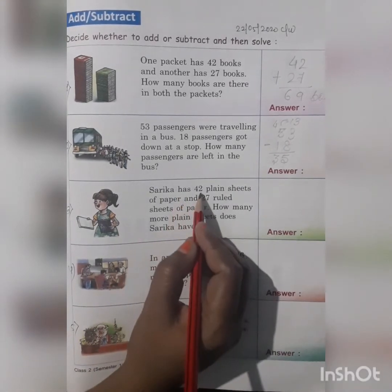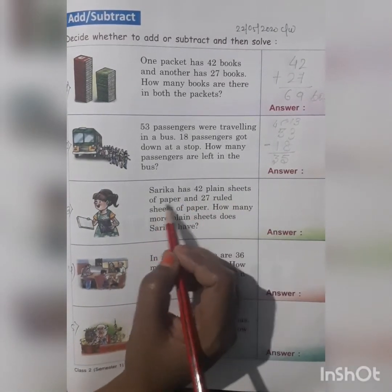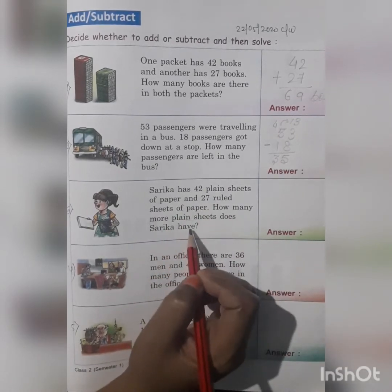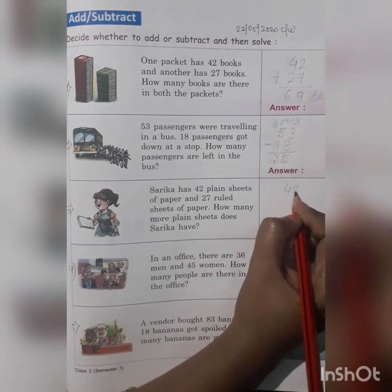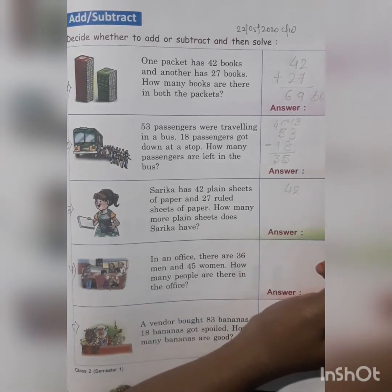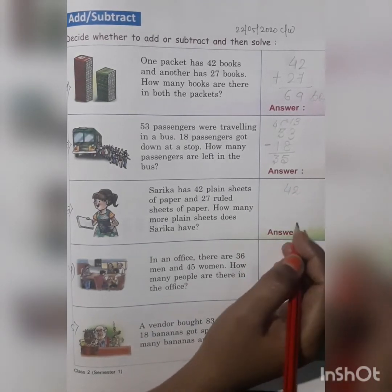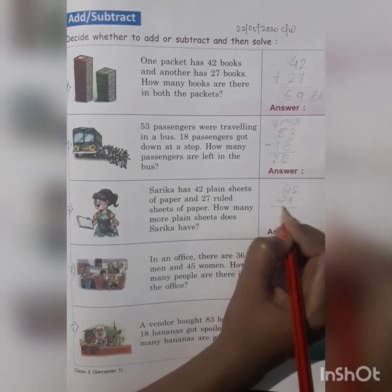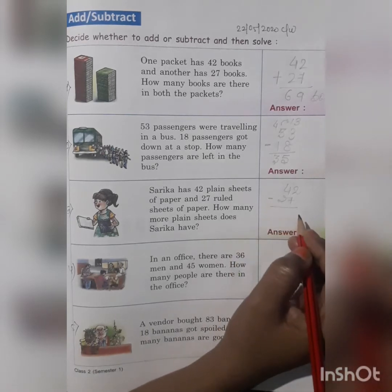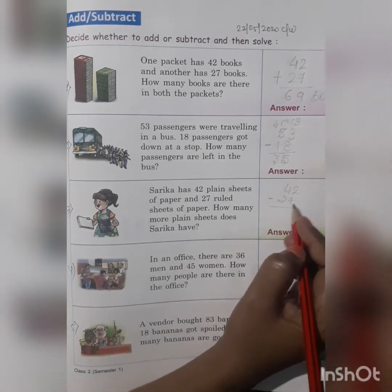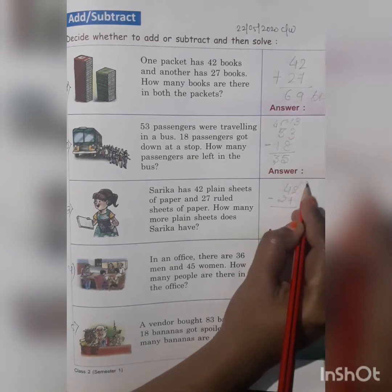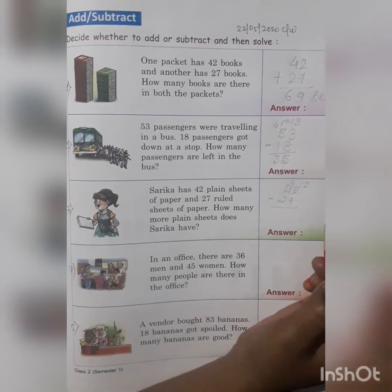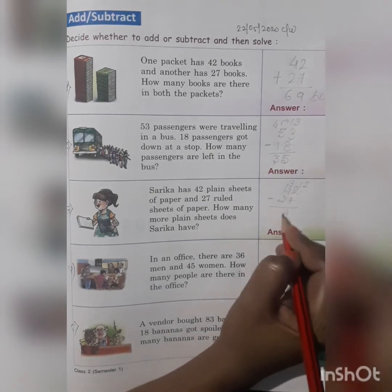Problem 3: Sarika has 242 plain sheets of paper and 27 drawn sheets of paper. How many more plain paper sheets does she have? We subtract: taking a carry, 7, 8, 9, 10, 11, 12; then 3 minus 2 is equal to 1. She has 15 more plain papers.